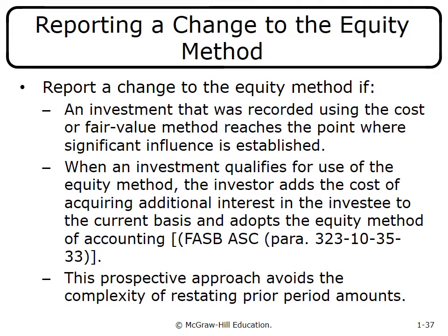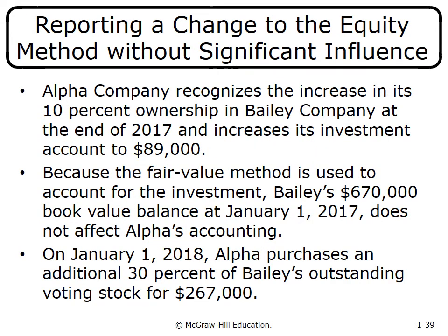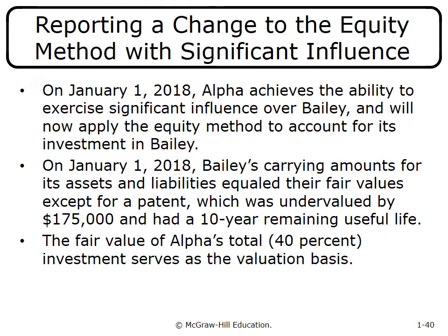Here is how a change to the equity method works: if Alpha Company acquires a 10% ownership in Bailey on January 1 for $84,000 with no significant influence, it reports under the fair value method, recognizing dividend income as revenue and fair value changes as income or loss. Then on January 1, 2018, Alpha acquires an additional 30% of Bailey's voting stock for $267,000, bringing total ownership to 40% and qualifying for the equity method.